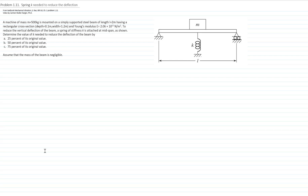We will calculate the constant of the spring needed to reduce deflection. We have a machine represented by mass M, mounted on a simply supported steel beam of length L equals 2 meters, having a rectangular cross-section of depth 0.1 meter and width 1.2 meters, and a Young's modulus of 2.06 times 10 to the 11 Pascals. To reduce the vertical vibration of the beam, a spring of stiffness k is attached at the mid-span. We would like to determine the constant of that new spring to reduce the deflection by 25%, 50%, and 75% of the original value. For this problem, we will neglect the mass of the beam compared to the mass of the machine.